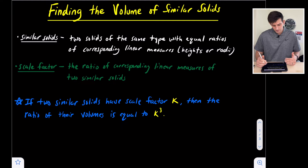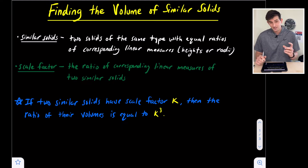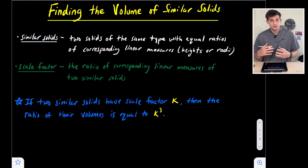And so that brings us to this blue sentence here. It says: if two similar solids have a scale factor of K, then the ratio of their volumes is equal to K cubed.